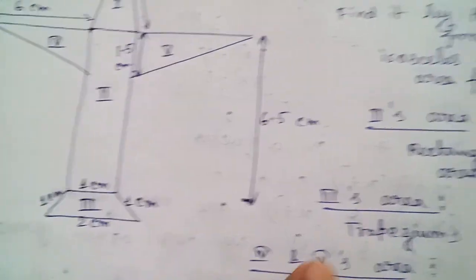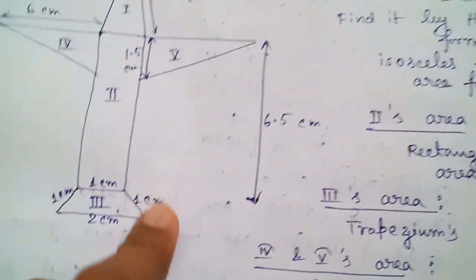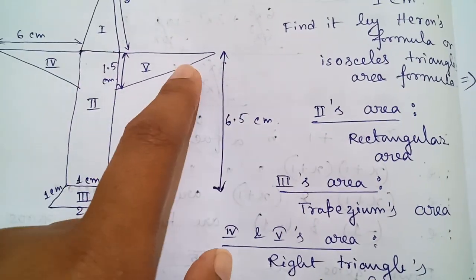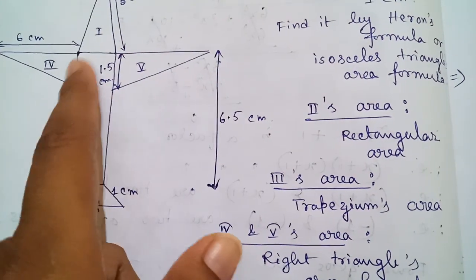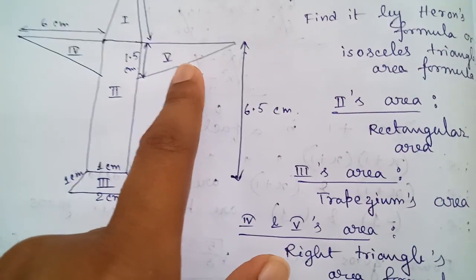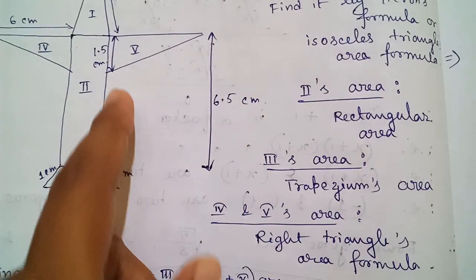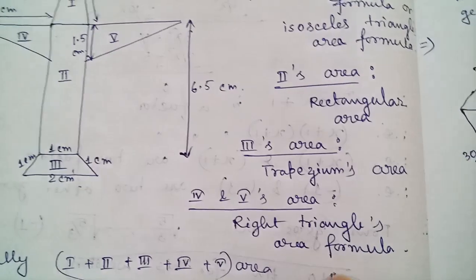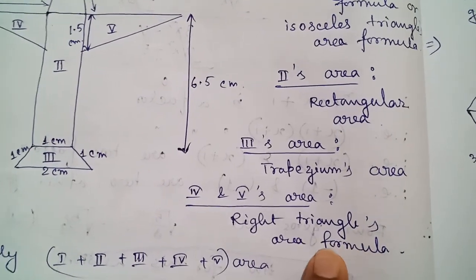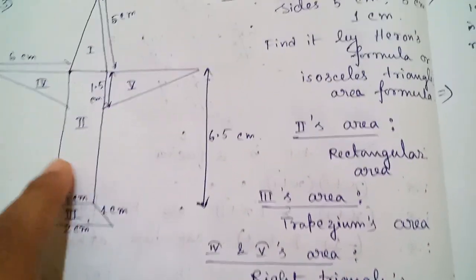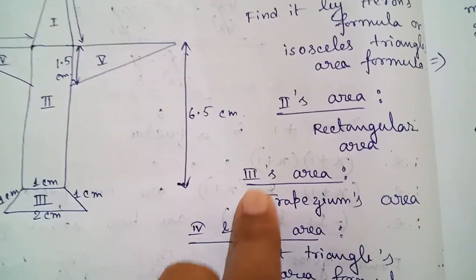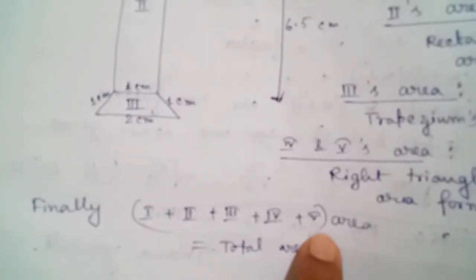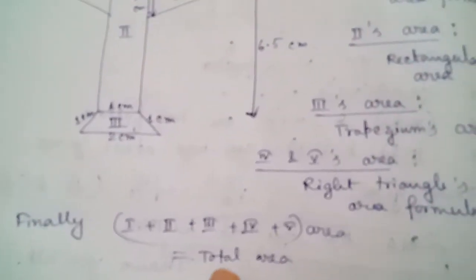For the trapezium: one centimeter this side, one centimeter this side, one, one, and two centimeters — find it using the Class 8 trapezium area formula. Then coming to number four and number five, which are the wings. Both wings will be of equal areas and are right triangles, so we will use the right triangle area formula. These are very easy.